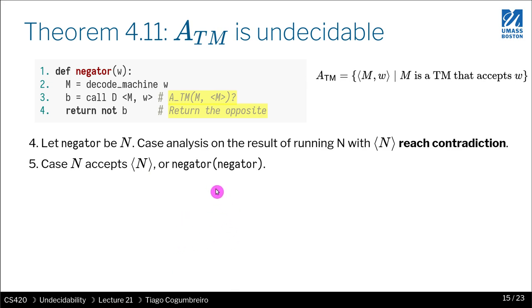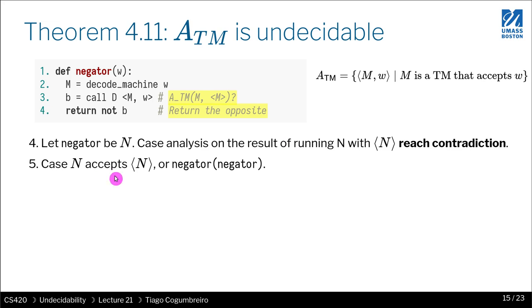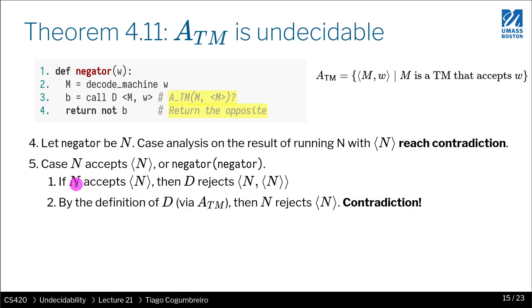And at least for the proof assistant, it's pretty obvious. So we're basically passing negator and we're passing its code to the negator. So what are we going to do? Well, let's do a case analysis on the result whether N, the negator, accepts its source code.